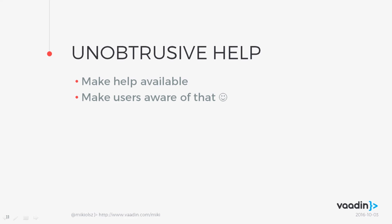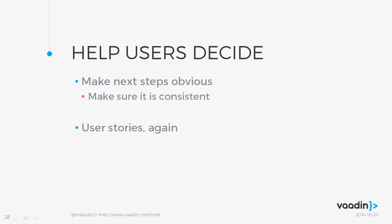Unobtrusive help means having help without actually stuffing it in the user's face — that usually works. You should assume that your users know how to use your software, except when they don't. Then you should indicate that there is help they might want to read, but they don't necessarily have to. They can still stare at the login screen for 10 minutes if they wish.